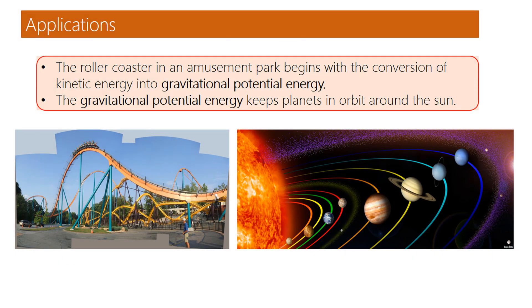Applications: The roller coaster in an amusement park begins with the conversion of kinetic energy into gravitational potential energy. The gravitational potential energy keeps planets in orbit around the Sun.